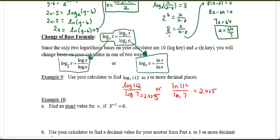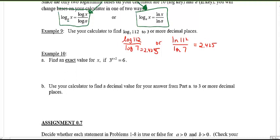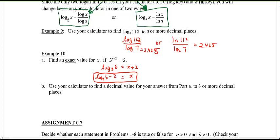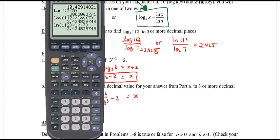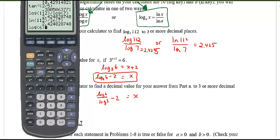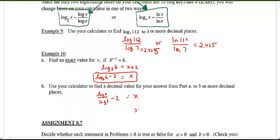For example 10, solve for x and give both an exact value and a decimal to three decimal places. With 3^(x+2) = 6, change to logarithmic form: log base 3 of 6 = x + 2, so x = log base 3 of 6 − 2. That's the exact form. To evaluate, rewrite using change of base: x = log(6) / log(3) − 2. Entering this in the calculator gives approximately −0.369.